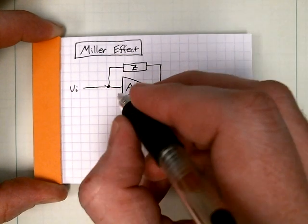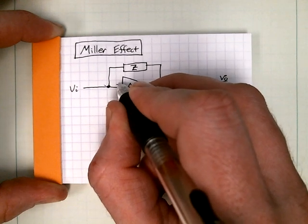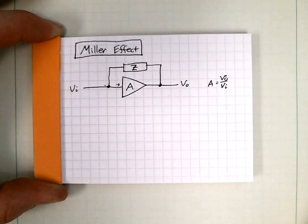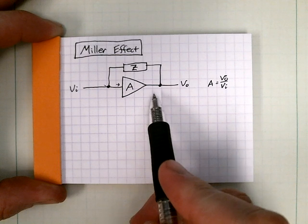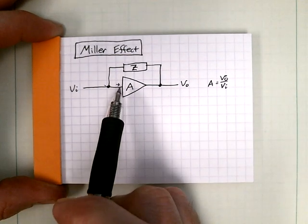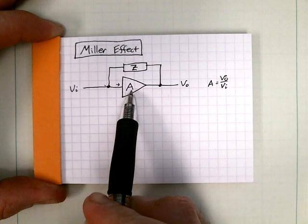Okay, so we have this. If we look into the input, we see an open circuit. This is an ideal voltage amplifier that we're assuming, so the input impedance of A itself is infinite.